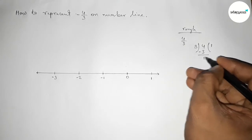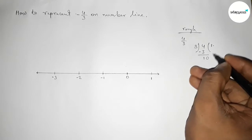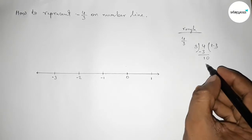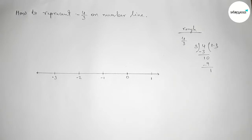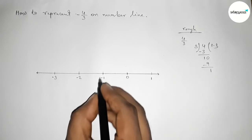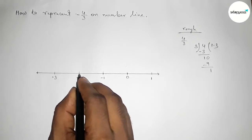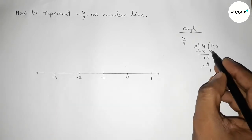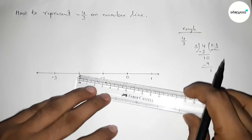Three goes into four once — three times one is three. Subtracting, we get one point three repeating. So the value of four by three will be approximately 1.33, confirming that minus four by three is between minus one and minus two.